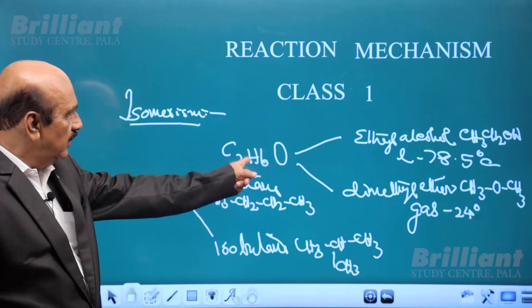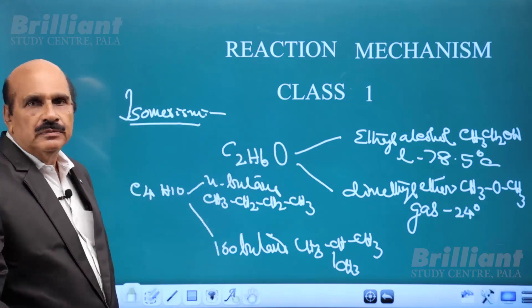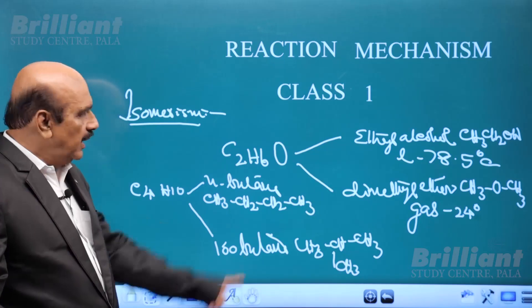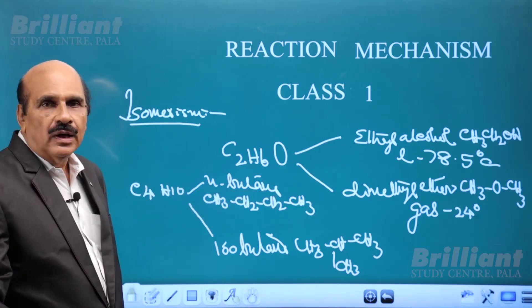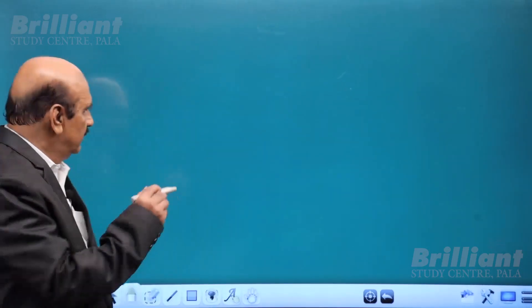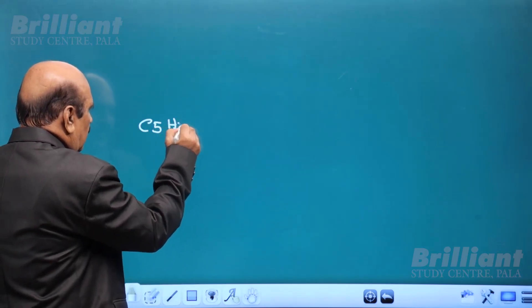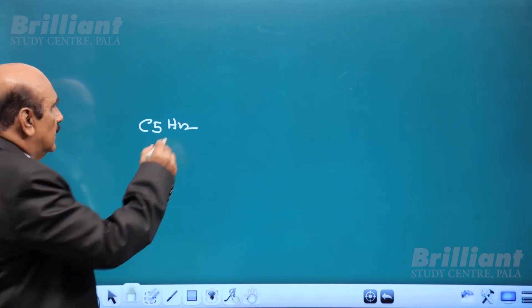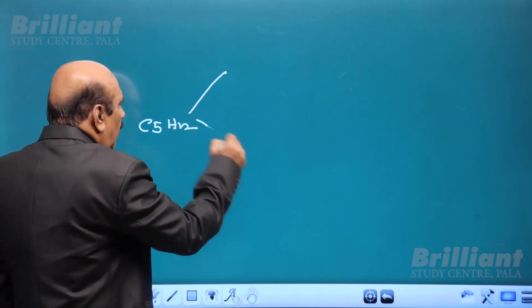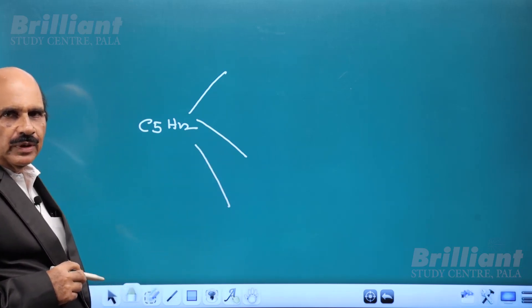Just as in the case of C2H6O corresponding to two different compounds, C4H10 also corresponds to two different compounds and they are also isomers. This phenomenon is called isomerism. A third example is that of pentane — molecular formula C5H12. It is also a hydrocarbon. There are three compounds having this formula with different physical and chemical properties.